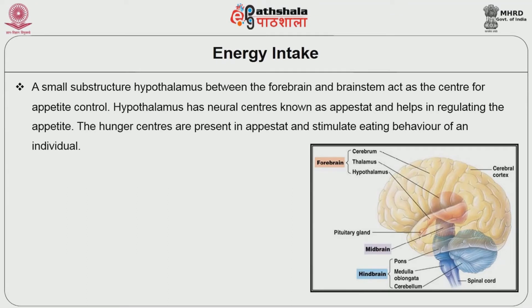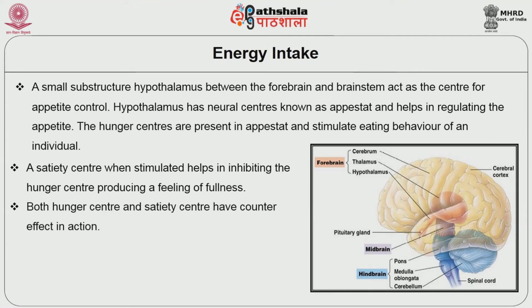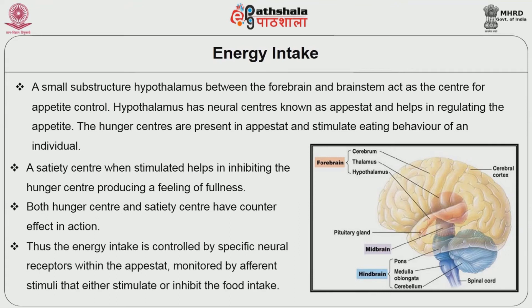The hypothalamus has neural centers known as the arcuate nucleus and helps in regulating the appetite. The hunger centers present in the arcuate nucleus stimulate eating behavior. A satiety center, when stimulated, helps in inhibiting the hunger center, producing a feeling of fullness. Both hunger center and satiety center have a counter effect on each other. Thus, the energy intake is controlled by specific neural receptors within the arcuate nucleus, monitored by afferent stimuli that either stimulate or inhibit food intake.